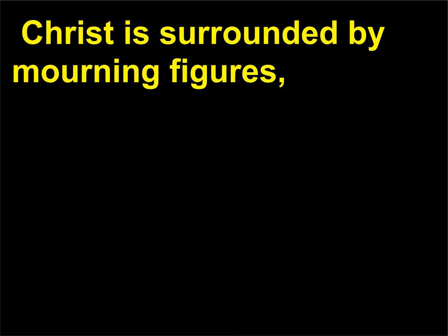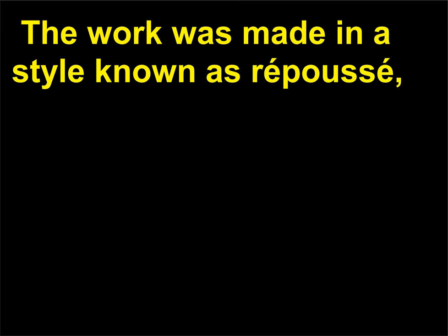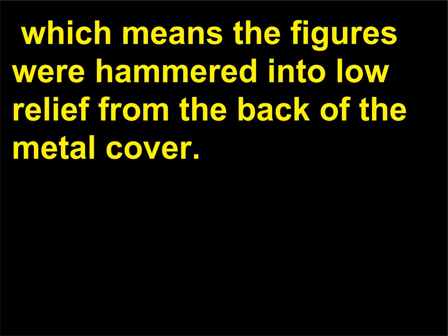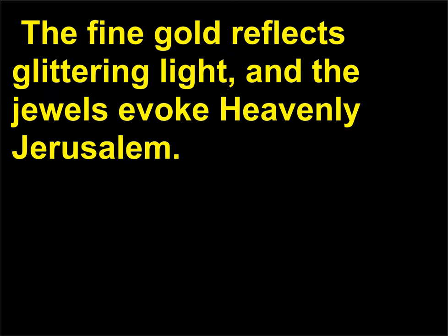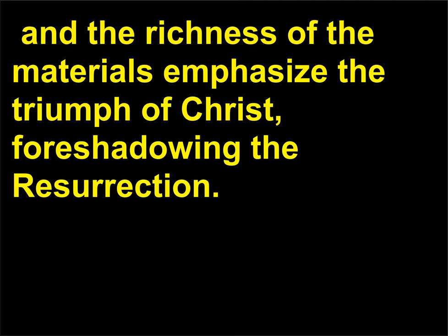Christ is surrounded by mourning figures but stands erect with his palms forward and stares powerfully ahead. The work was made in a style known as repoussé, which means the figures were hammered into low relief from the back of the metal cover. The fine gold reflects glittering light, and the jewels evoke heavenly Jerusalem. The obvious luxury of the cover indicates the inherent value of books during the medieval period, and the richness of the materials emphasizes the triumph of Christ, foreshadowing the resurrection.